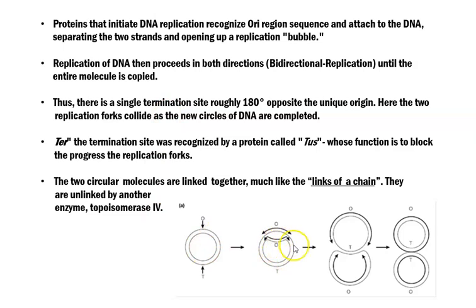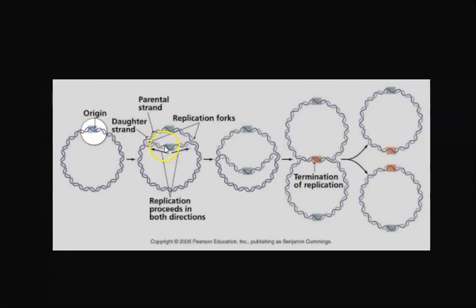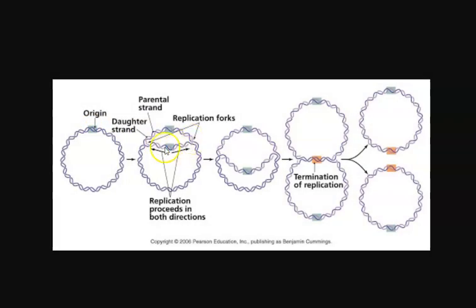Replication proceeds in both directions until the entire DNA molecule is copied. Looking from the origin site, approximately 180 degrees opposite, you can find the termination site. From the origin, replication forks start and proceed bidirectionally, extending while forming the theta-like structure that resembles the Greek alphabet.